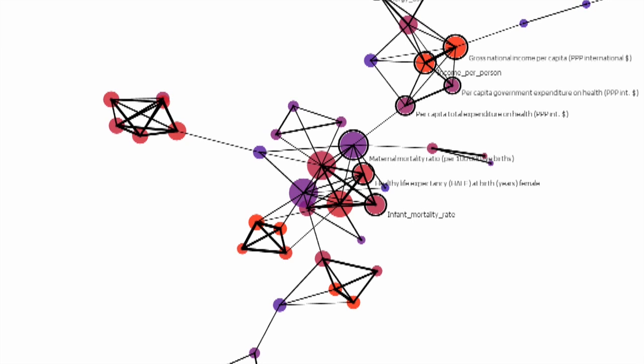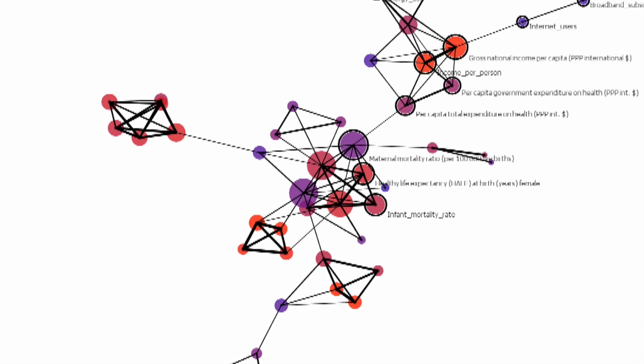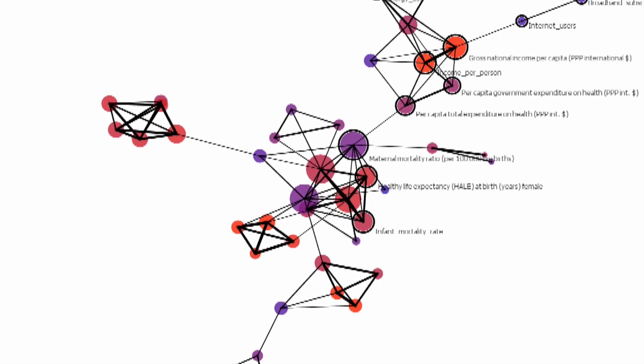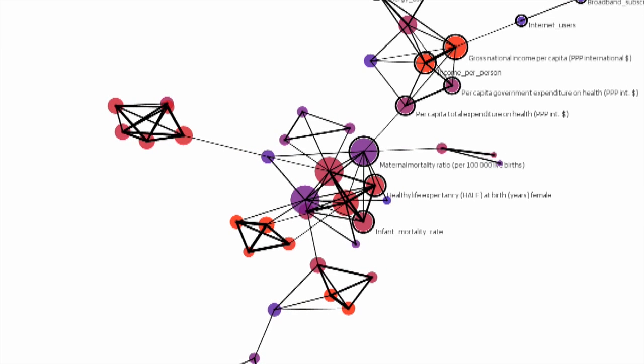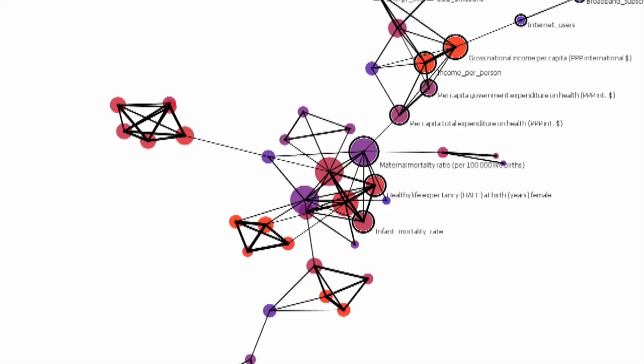Independently, these income variables are also related to technology variables like internet users per capita. When we do this, we really start to get a sense of how different variables are related to each other without necessarily worrying about only finding specific types of patterns in our data.